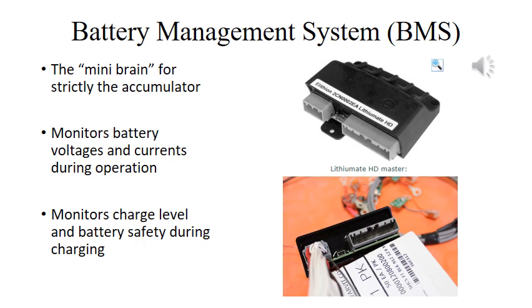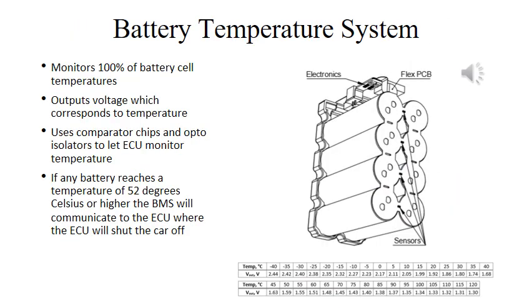At the top right, you can see an image of our BMS, and the lower right, you can see its pinout with low voltage pinouts on the left side and high voltage pinouts on the right. Per FSAE rules, our accumulator temperature must be kept below 60 degrees Celsius. The current system we have in place will alert the ECU if any battery goes above 52 degrees Celsius. This adds an added buffer of safety to our car design.